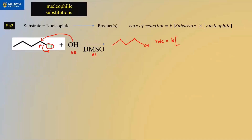The rate of the reaction is k times the concentration of the substrate times the concentration of the nucleophile, OH⁻. You can write the substrate in terms of its molecular formula — counting carbons and hydrogens — and both representations are correct. This is an SN2 reaction because it has a strong negatively charged base, an aprotic solvent, Br as the leaving group, and a primary carbon. Since it's primary, we cannot address inversion of configuration here.